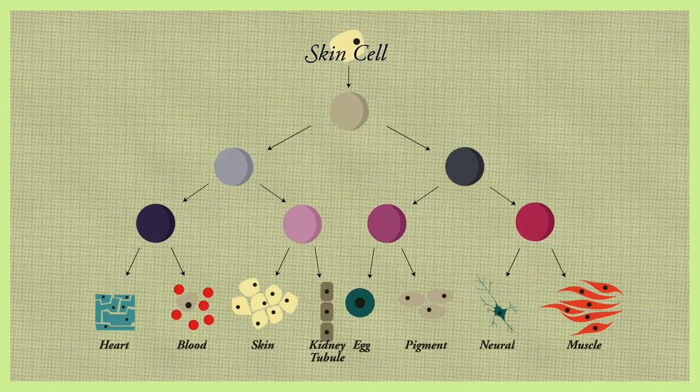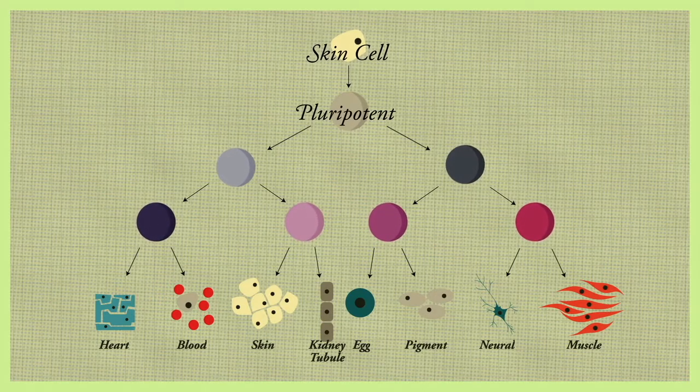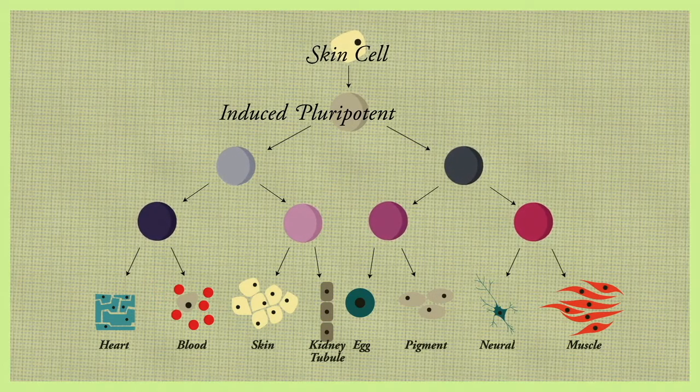This newfound ability is known as pluripotency, and therefore these cells are known as induced pluripotent stem cells, or IPS.